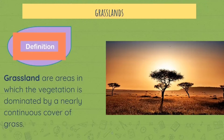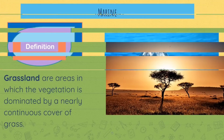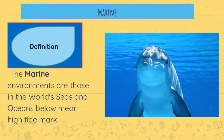Grasslands are areas in which the vegetation is dominated by nearly continuous cover of grass. There are different types of grasslands, and you can research them. A popular one is called savannah — do you know any more?